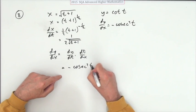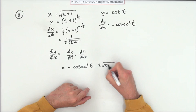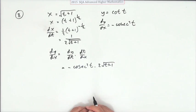Cosec squared. dt by dx is this upside down, so that's 2√(t+1), and then that would do, or any other combination that takes your fancy.